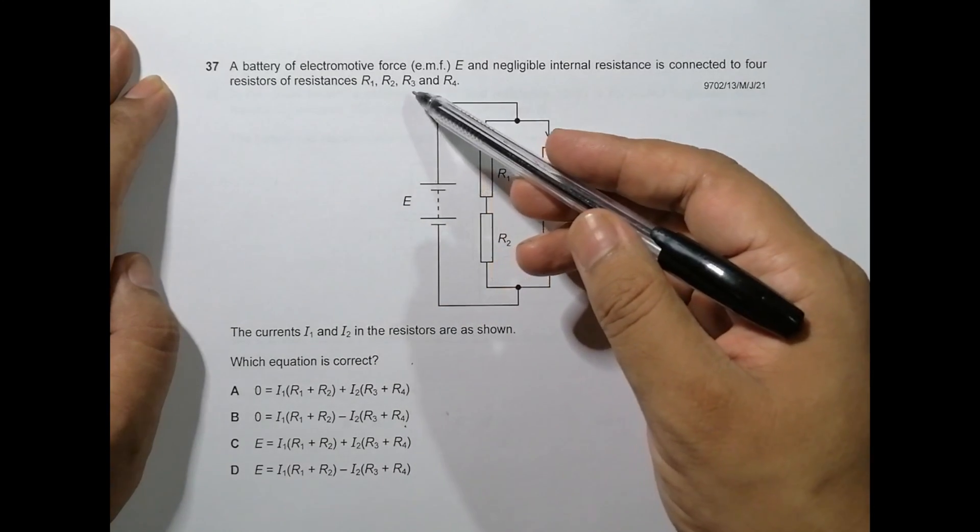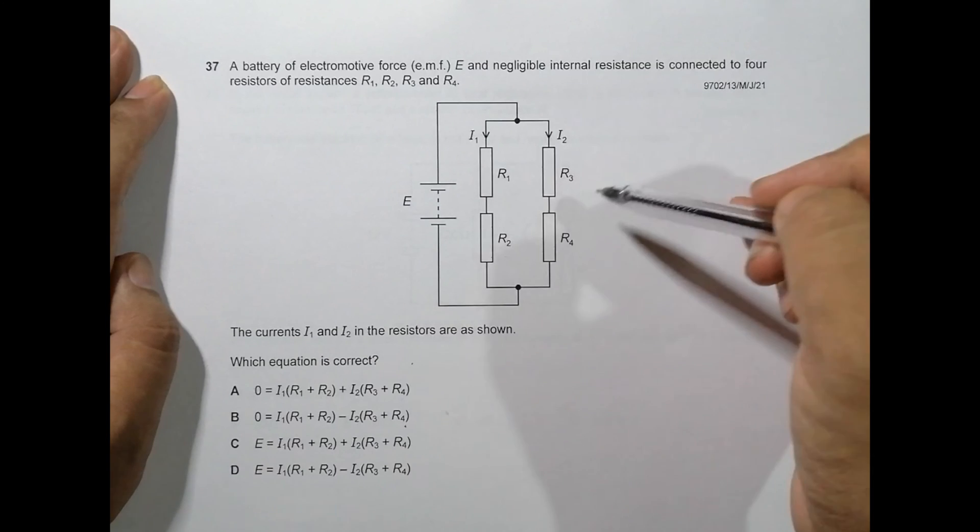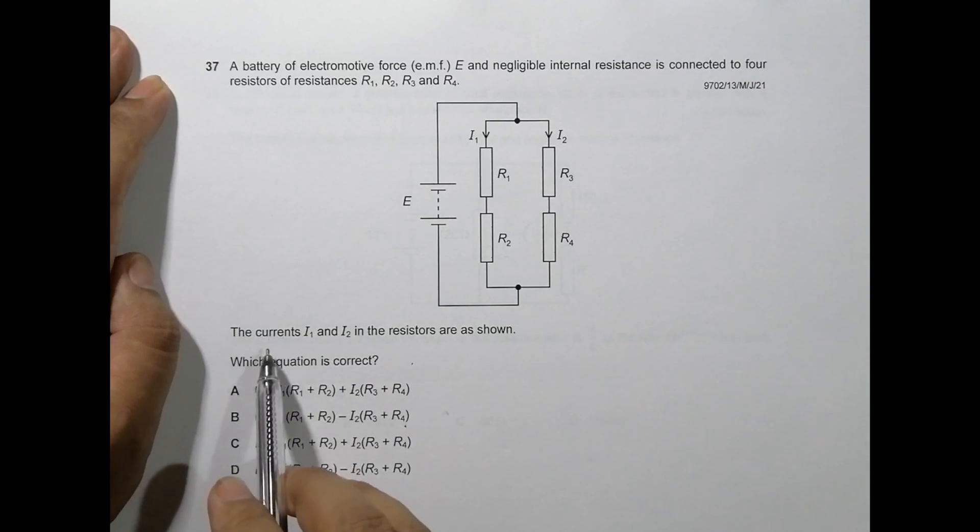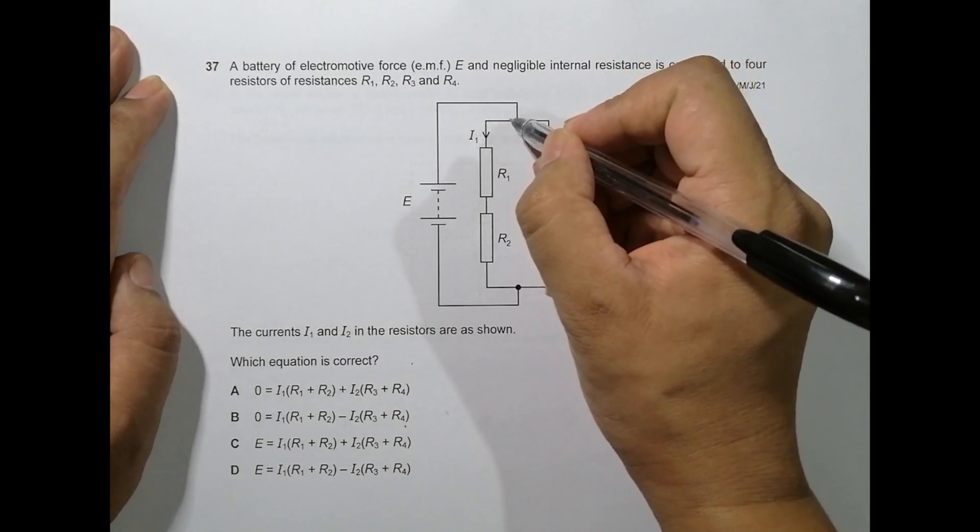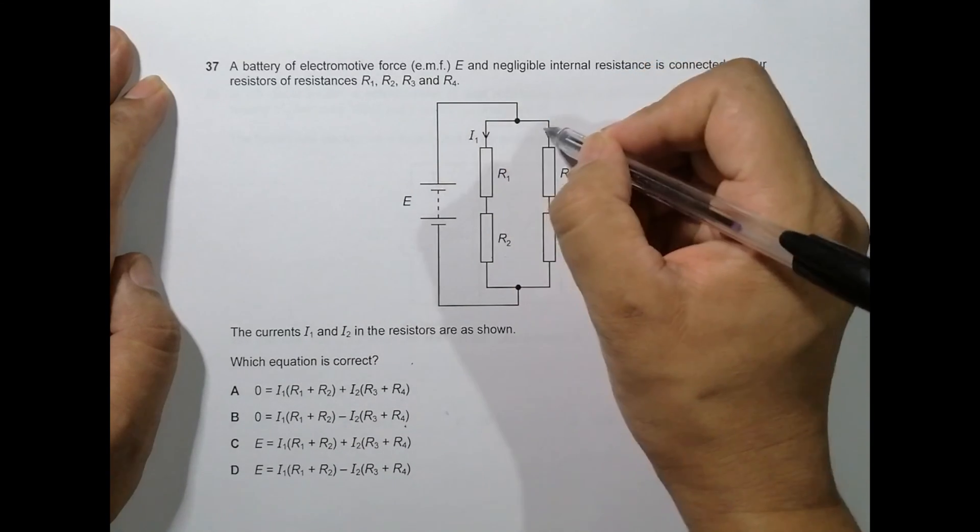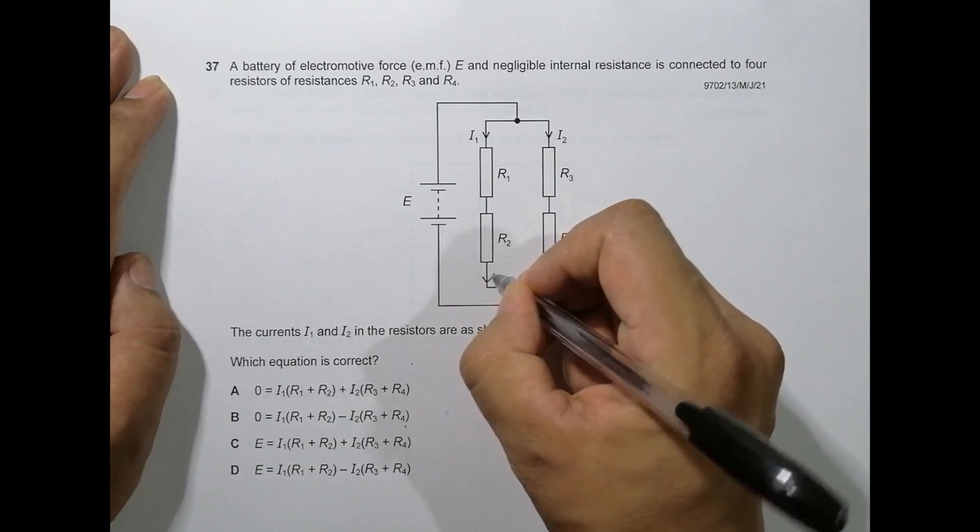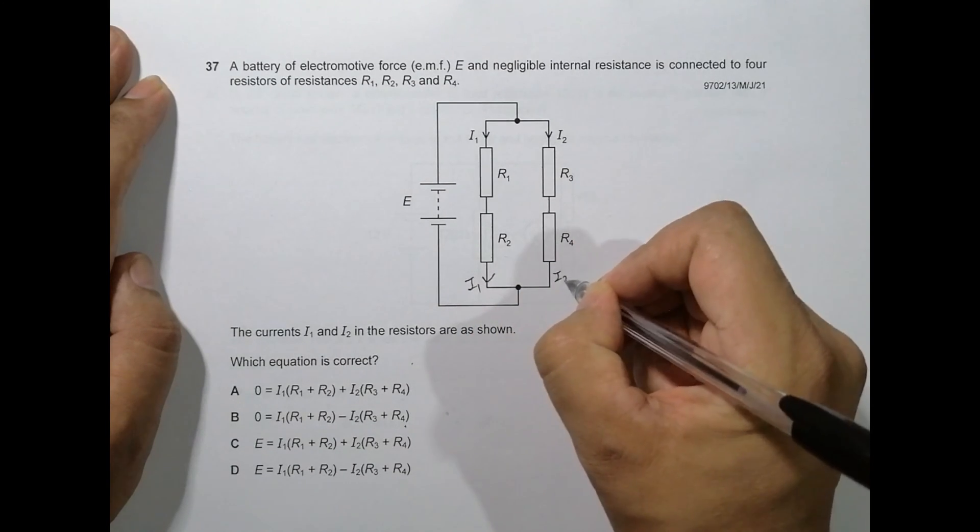These are the resistors. The currents I1 and I2 in the resistors are shown. That means there is branching here - I1 here, I2 here. So it will be I1 here and I2 here.